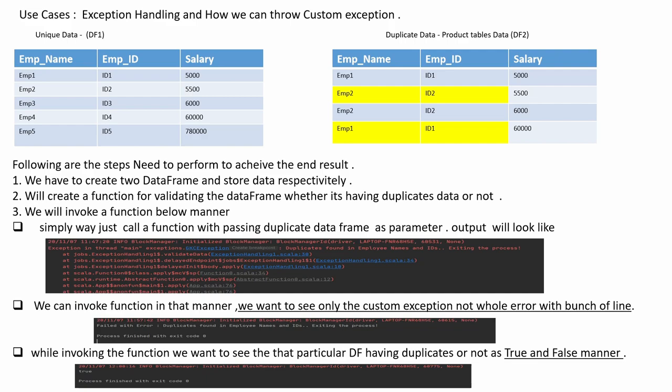First step: we have to create two DataFrames and store data respectively. Second: we have to create a function for validating the DataFrame — whether it has duplicate data or not, depending on which DataFrame we pass. Third: we will invoke that function in the manner shown below.